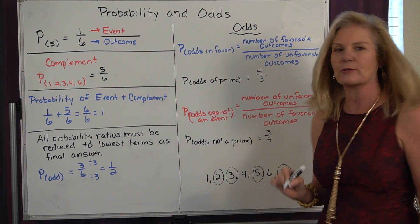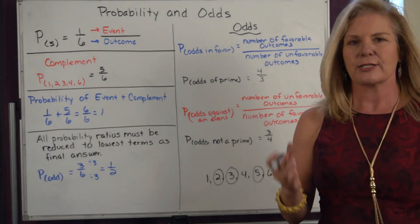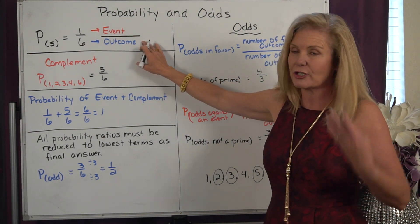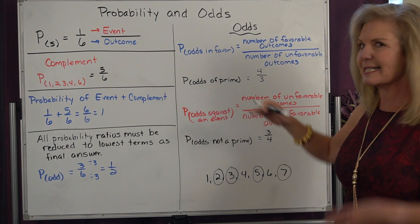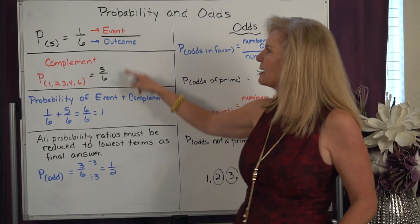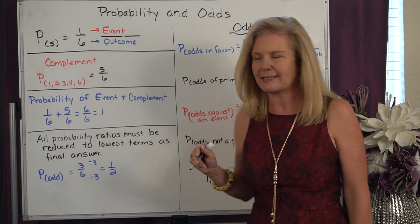So we're not looking at the total ways like we did on just a regular ratio. In odds, it's the way it can happen versus the way it cannot. It's really comparing those complements.